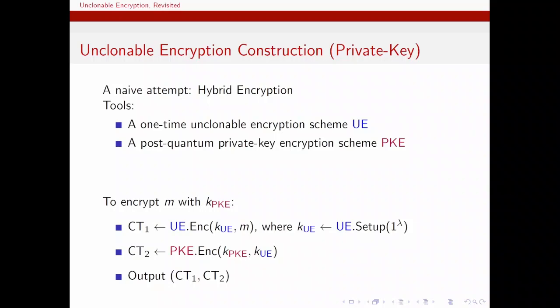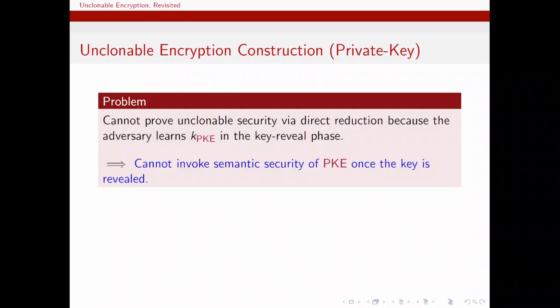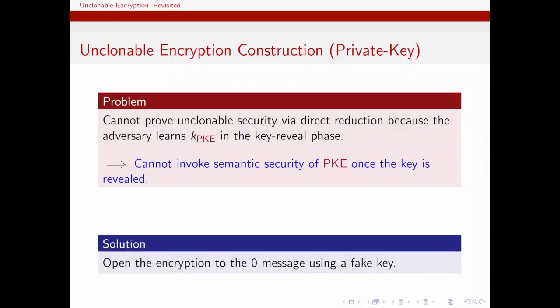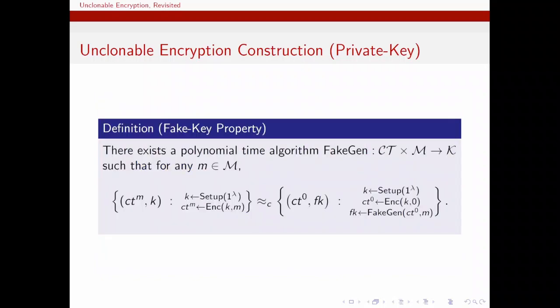It is well known that hybrid encryption like this inherits semantic security from the outer layer encryption, PKE. As for unclonable security, a direct reduction unfortunately does not work due to the nature of the cloning experiment. Recall that in the second phase of the cloning experiment, the key is revealed, which makes it a challenge to invoke the semantic security of PKE. To overcome this issue, we've come up with a property which makes the encryption non-binding. Fake key property states that, in the eyes of the adversary, a ciphertext key pair is indistinguishable from another pair where the encrypted message is zero and the key is a fake key generated using the ciphertext and the original message.